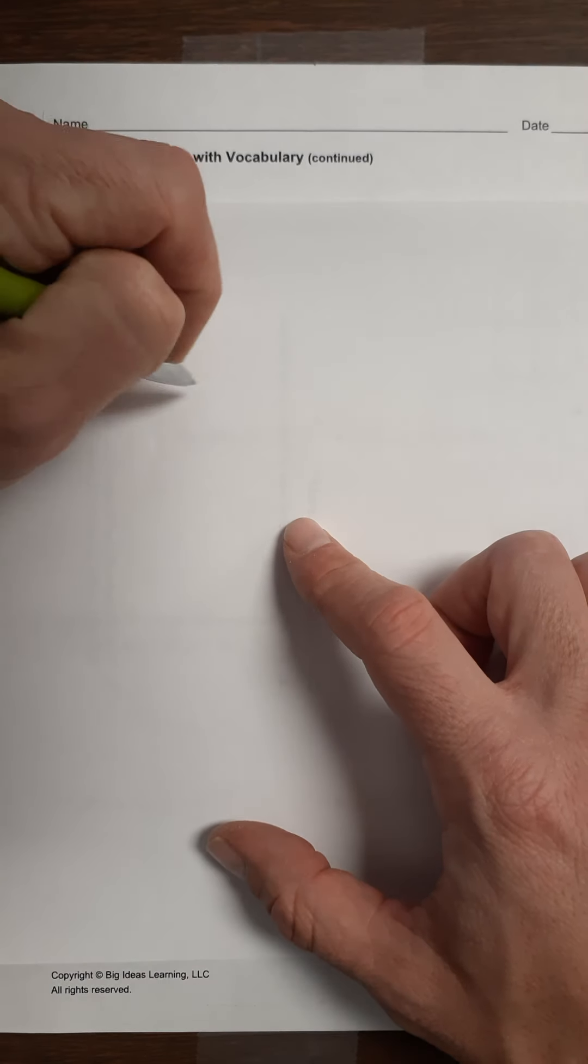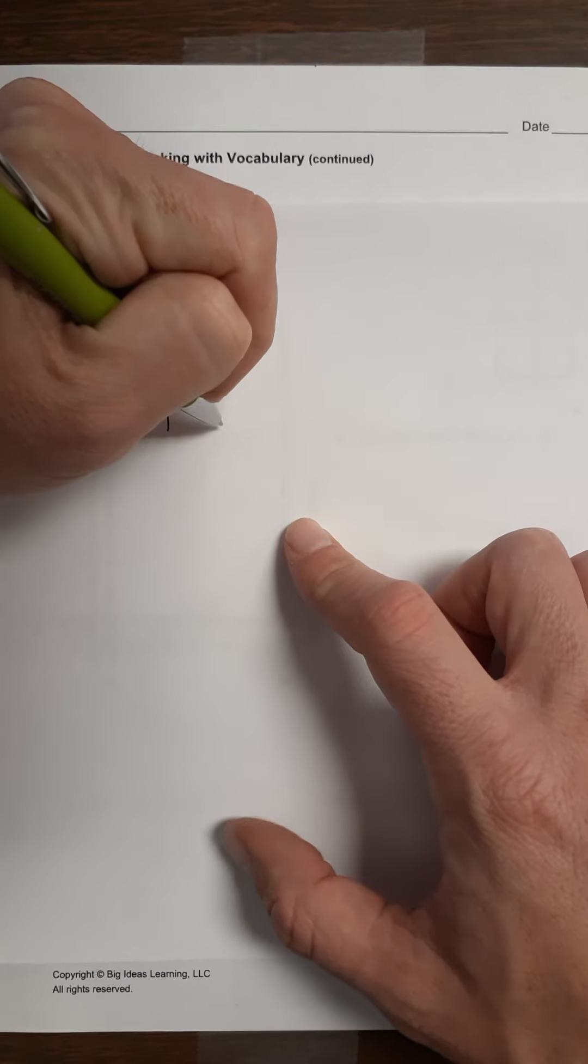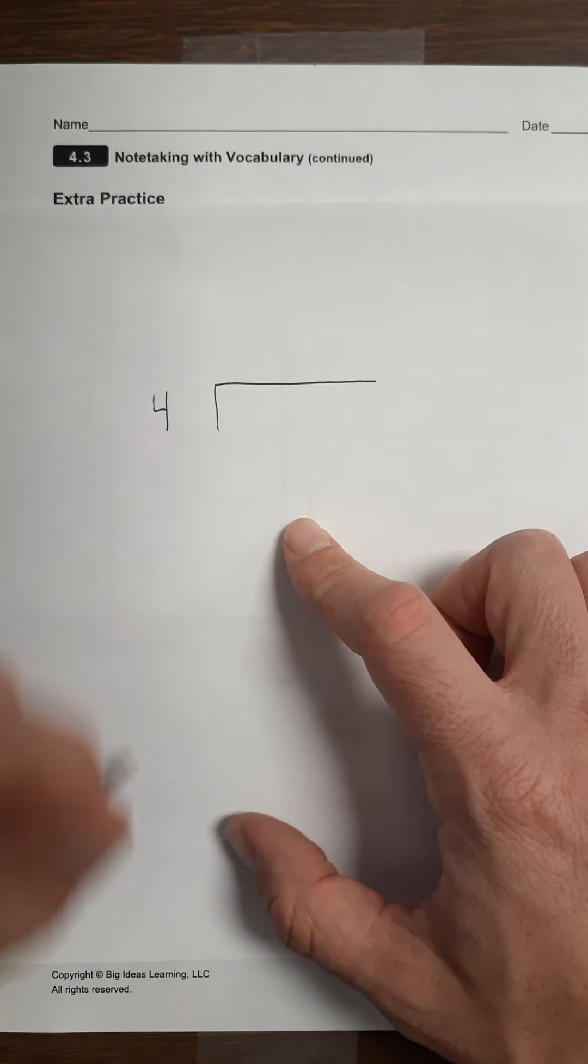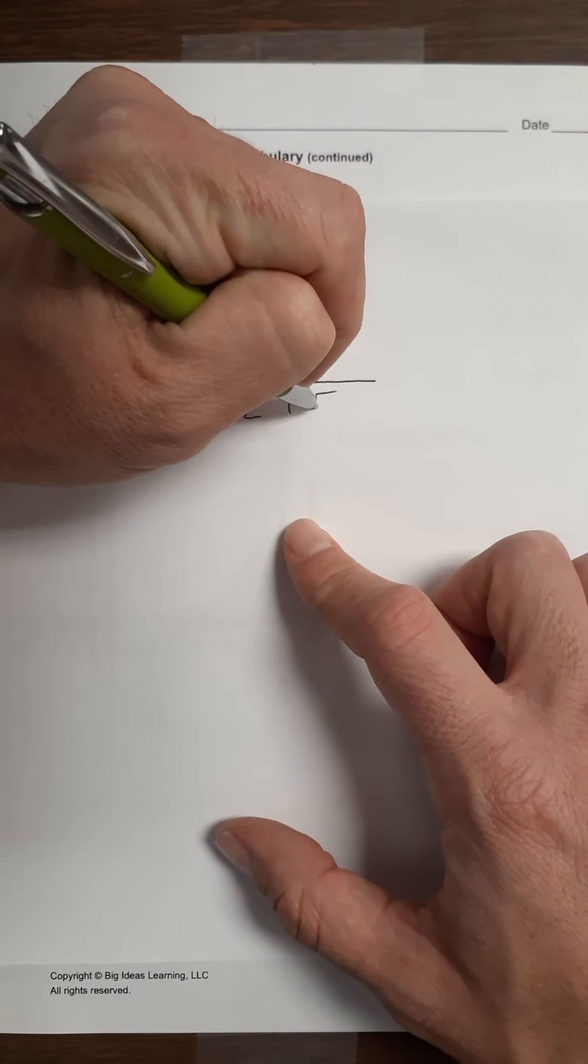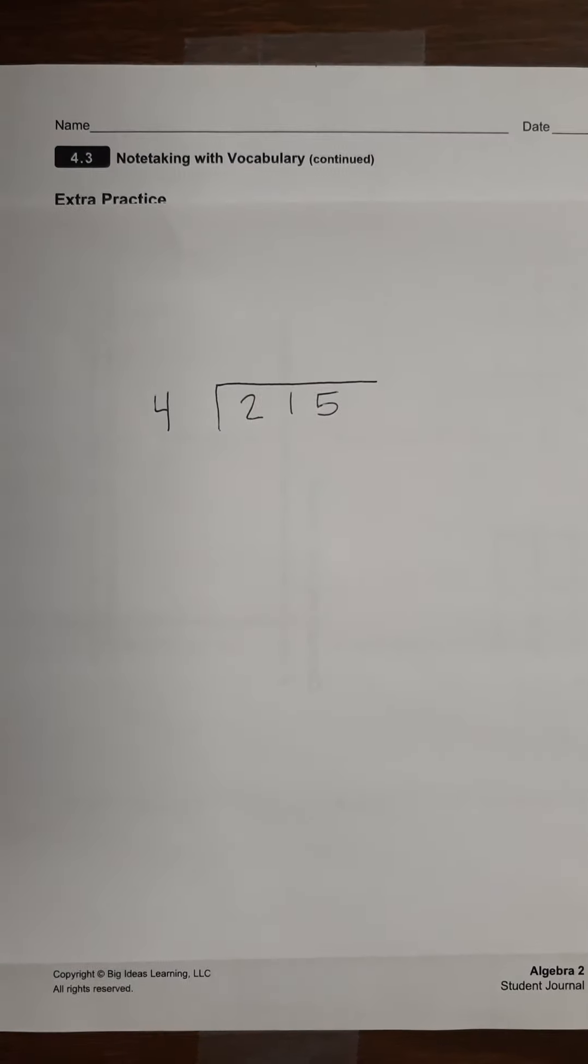So first, we're going to need to know how to do long division. Probably your favorite thing from fourth grade would be my guess. So let's practice just doing long division. Let's get your notebook out, and let's try to divide 215 divided by 4. So 215 in here, and then we'll put the 4 out here.